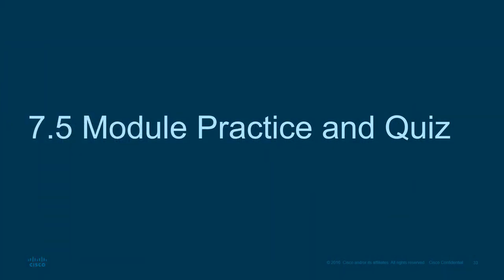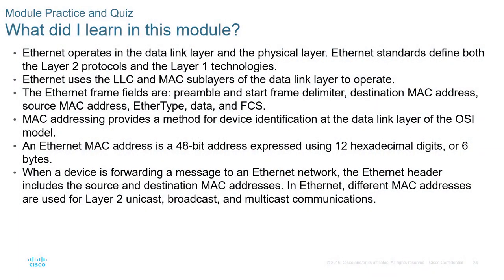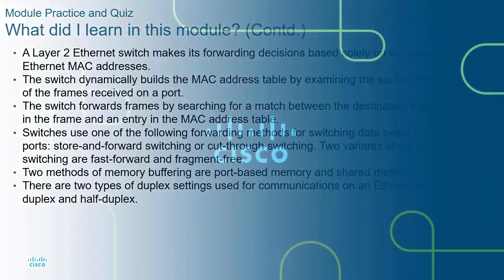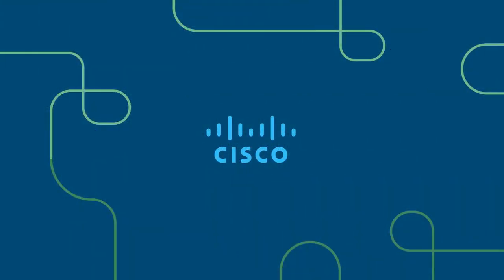That concludes this chapter. We covered the data link layer components, MAC address structure, frame check sequence numbers, LLC versus MAC sublayers, how a switch makes forwarding decisions, how a switch builds its MAC address table, shared versus port-based memory buffering, and speed and duplex settings. If you have any questions or concerns, please reach out. Thank you.